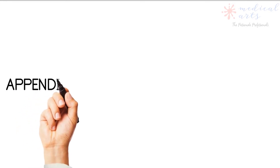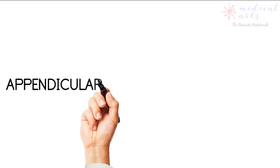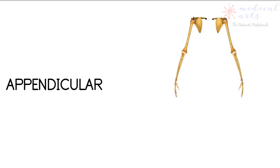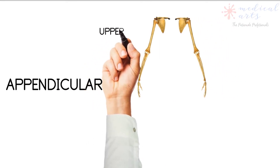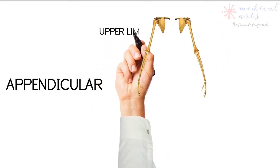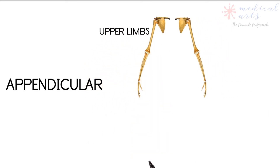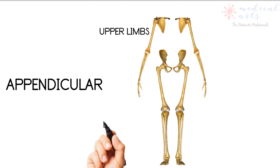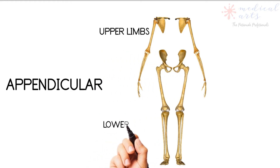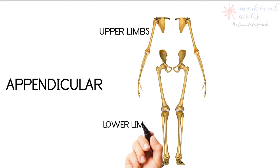The appendicular is made of more bones — 126 bones. This allows for more flexibility in our daily activities. To simplify the understanding of the appendicular skeleton, we will break it down into two parts: the upper limbs and the lower limbs.